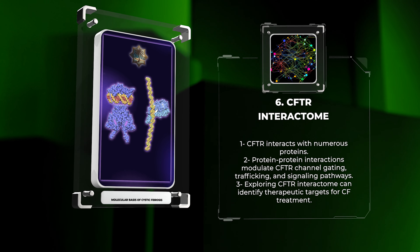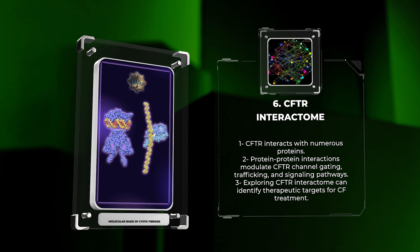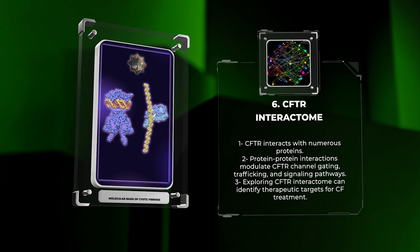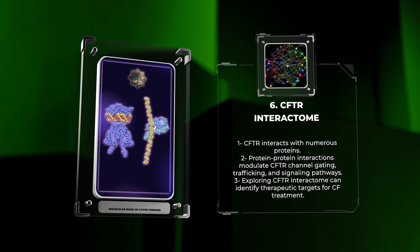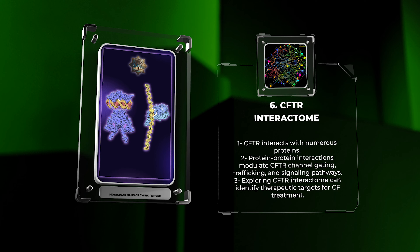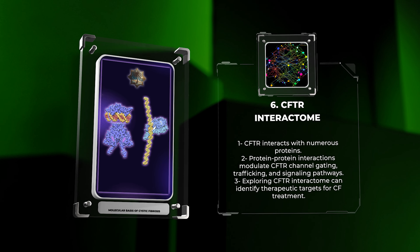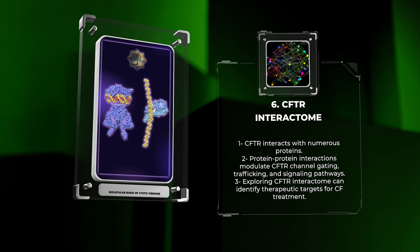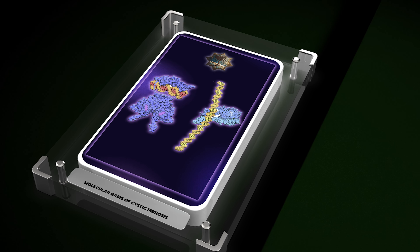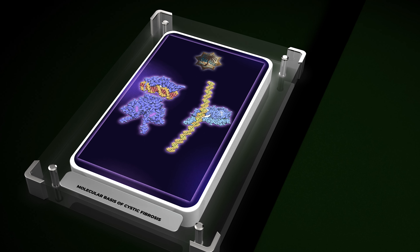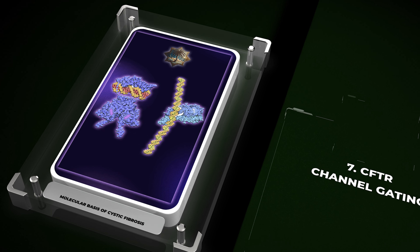CFTR interacts with numerous proteins, forming a complex network that regulates its function. These protein-protein interactions modulate CFTR channel gating, trafficking, and signaling pathways. Exploring the CFTR interactome can unravel novel therapeutic targets for CF treatment.